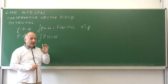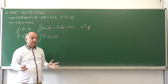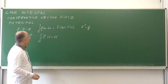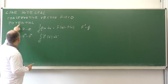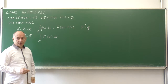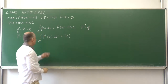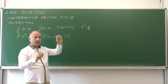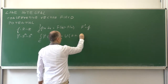It would be nice to have some function such that the integral equals the difference of the function values. And it turns out that for some vector fields such a function exists and is called the potential, and such a vector field which has a potential is called a conservative vector field. If we denote the potential u, then the line integral equals the potential at the end point minus the potential at the initial point of the curve C.